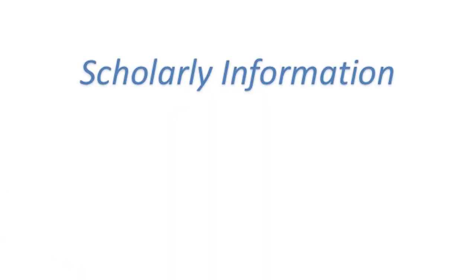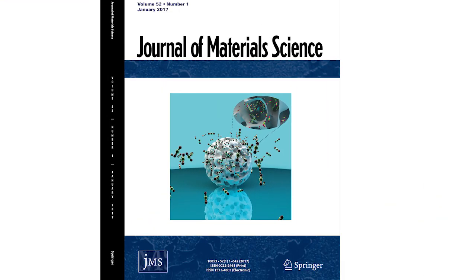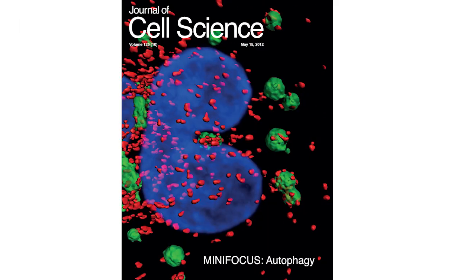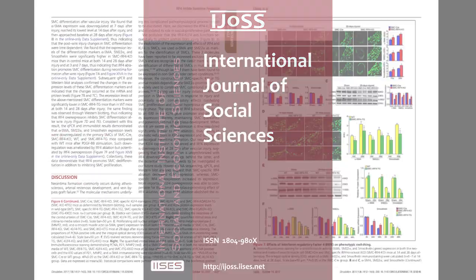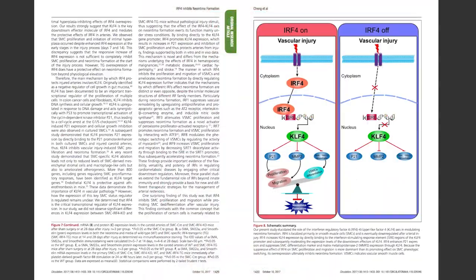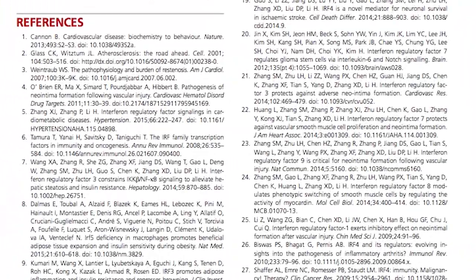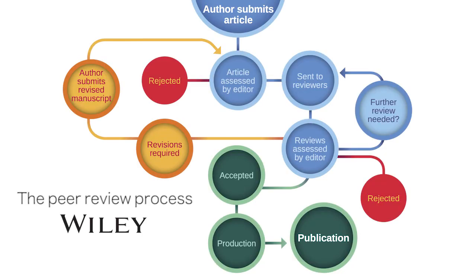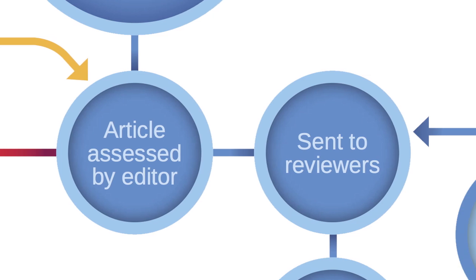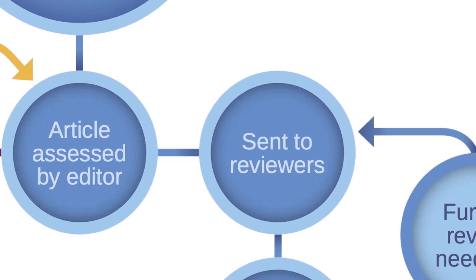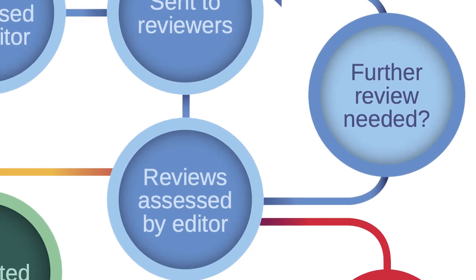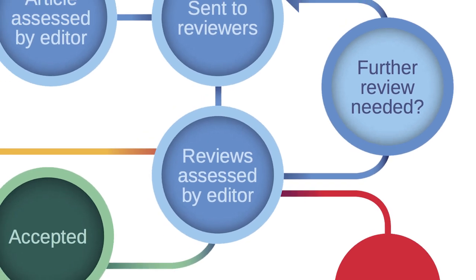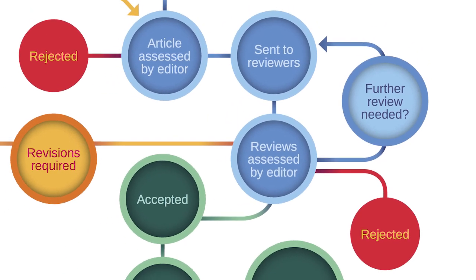Scholarly information. A scholarly publication is written by academics for a predominantly academic audience. It's evidence-based, always includes a bibliography or list of references, and is often peer-reviewed. Peer review is an editorial process through which a paper has progressed before being accepted for publication. Prior to its publication, the article has been read and assessed by researchers in the same field, and it may even have had to be rewritten and resubmitted based on the assessment of the reviewers.